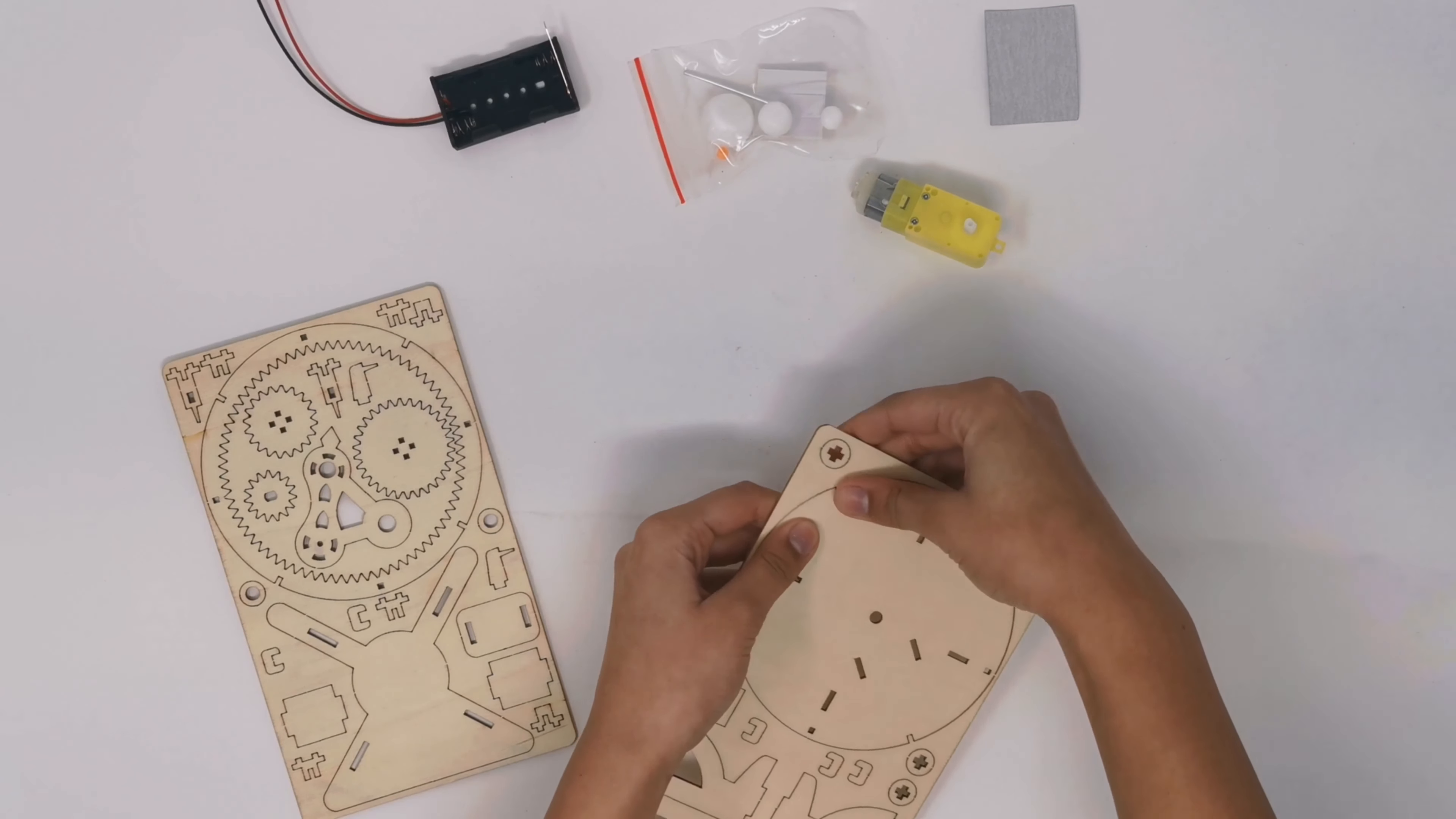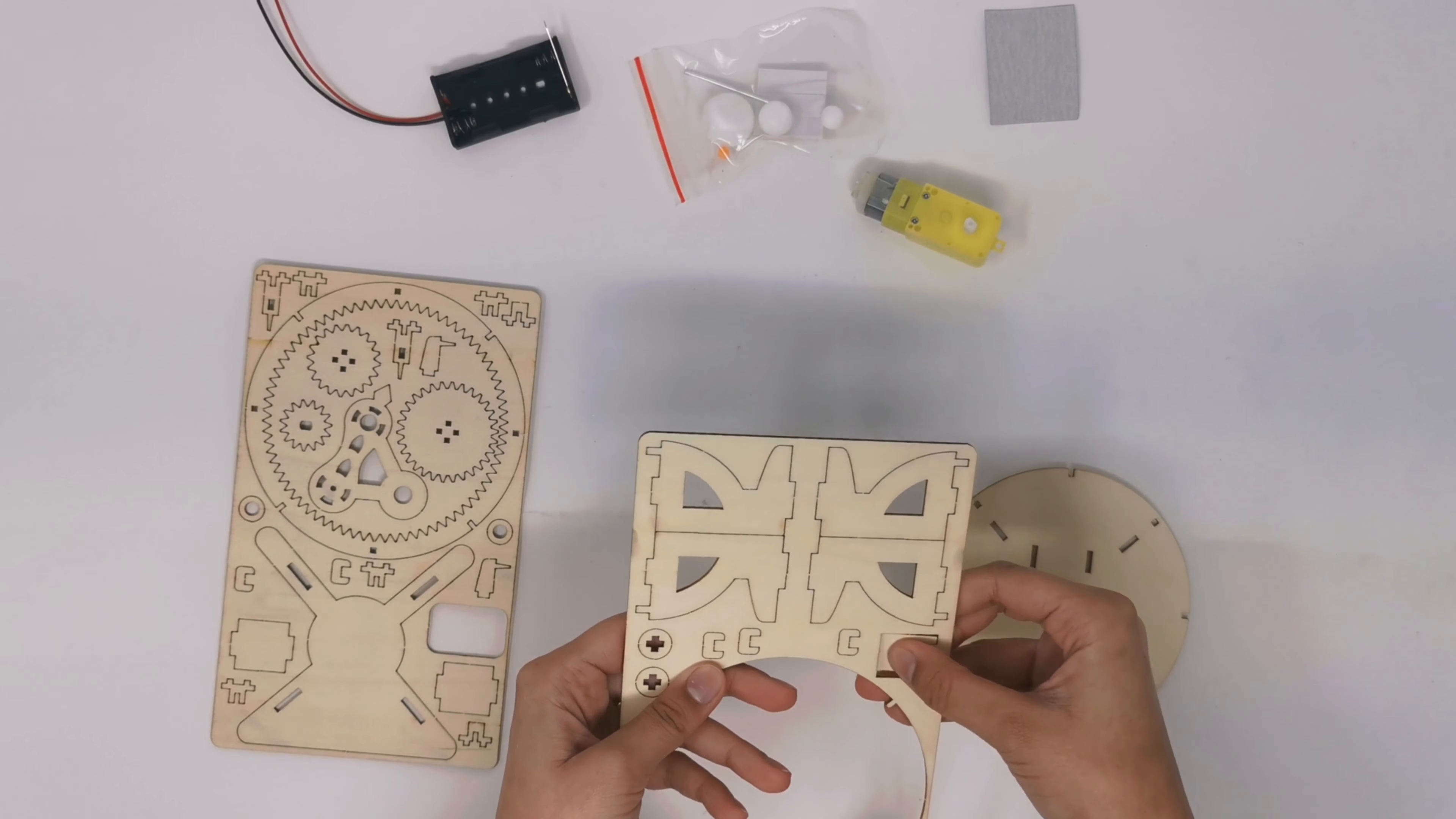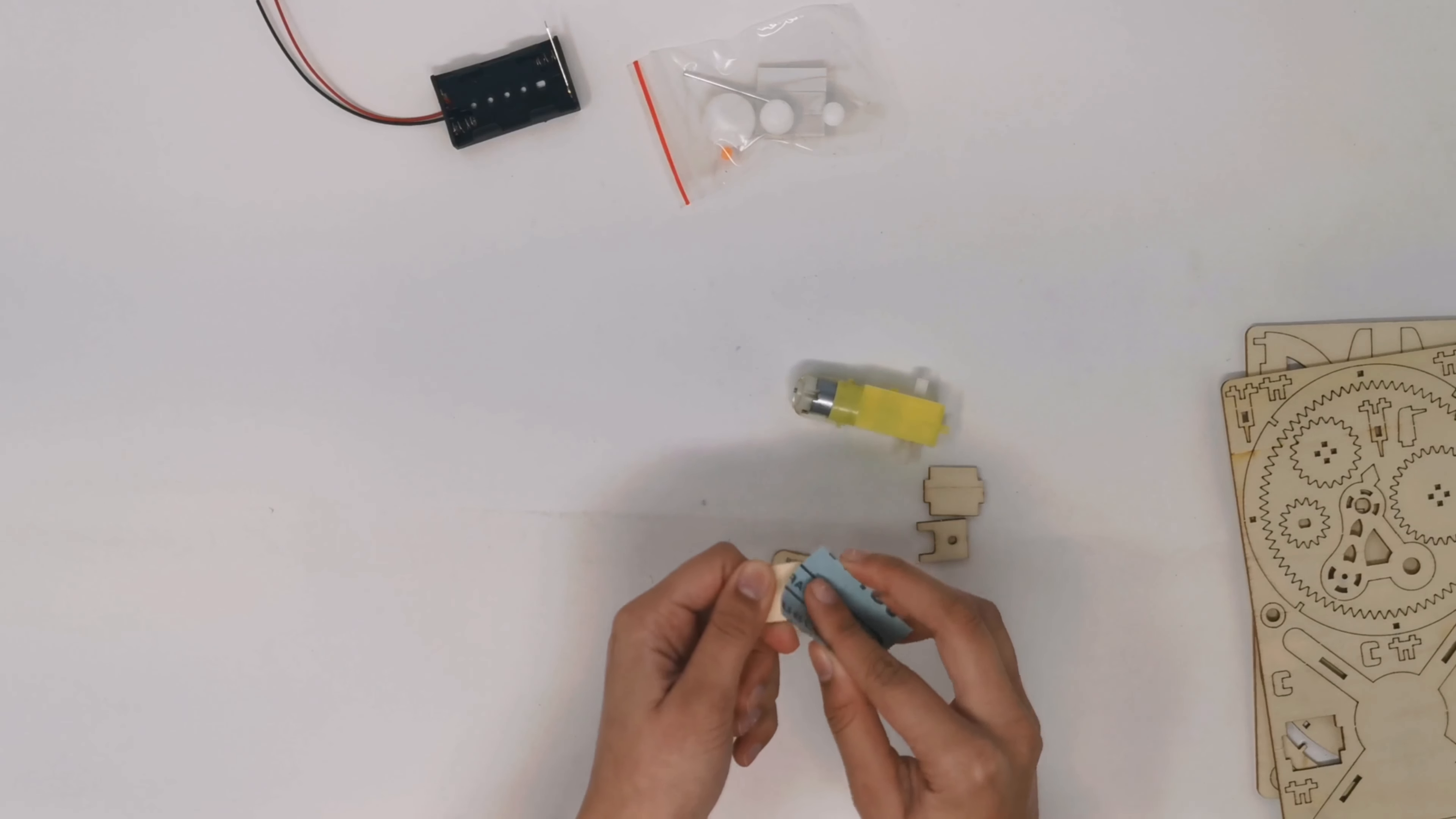First, pop out all your pieces as you will need them. For step one, you will need these four pieces. And before you put them together, make sure to sand them so they fit smoothly.